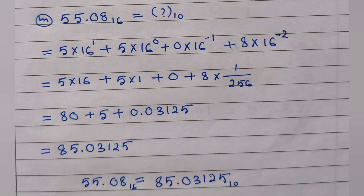Here we convert a fractional hexadecimal number into decimal. We multiply each digit by 16 to the power of its index: 1, 0, minus 1, minus 2. So 5 into 16 gives 80, then 5 into 1 gives 5, then 0 into 16 power minus 1 is 0, and 8 into 16 power minus 2 equals 8 by 256, which gives 0.03125. The final answer is 85.03125.